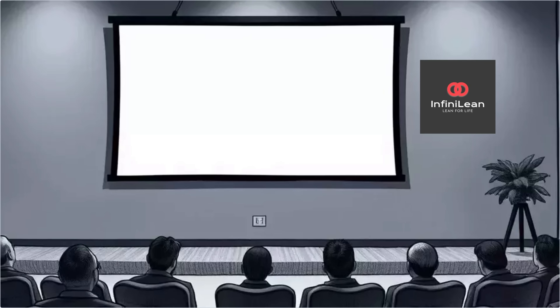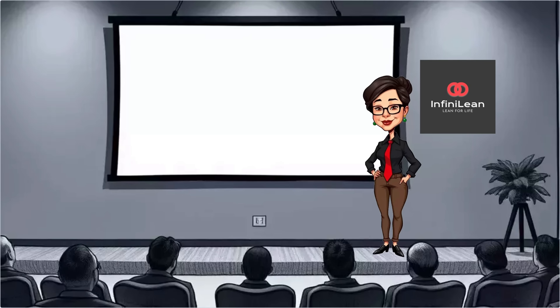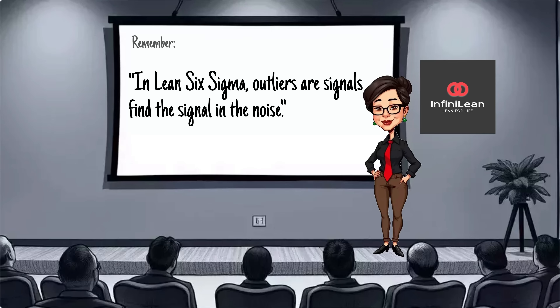In short, dealing with outliers is an integral part of maintaining the reliability of Six Sigma projects. They offer both challenges and opportunities for insight. With the right approach, you can turn what seems like a problem into an advantage. Remember, outliers aren't just annoying data points — they're signals. And in Lean Six Sigma, your job is to find the signal in the noise.